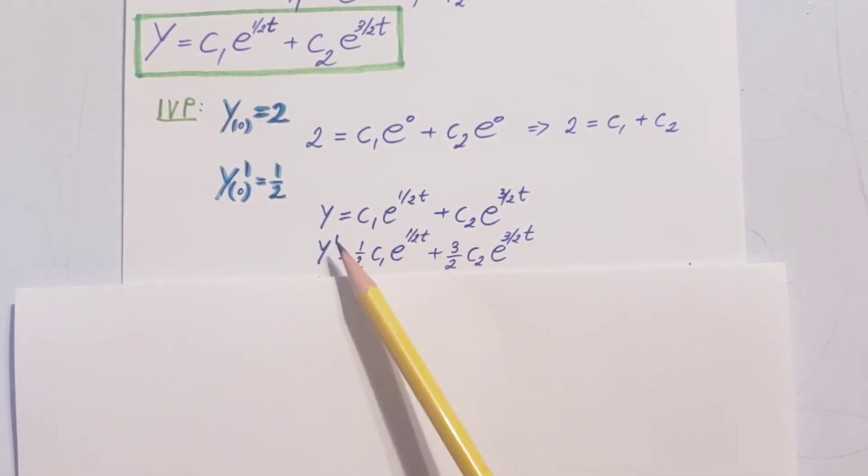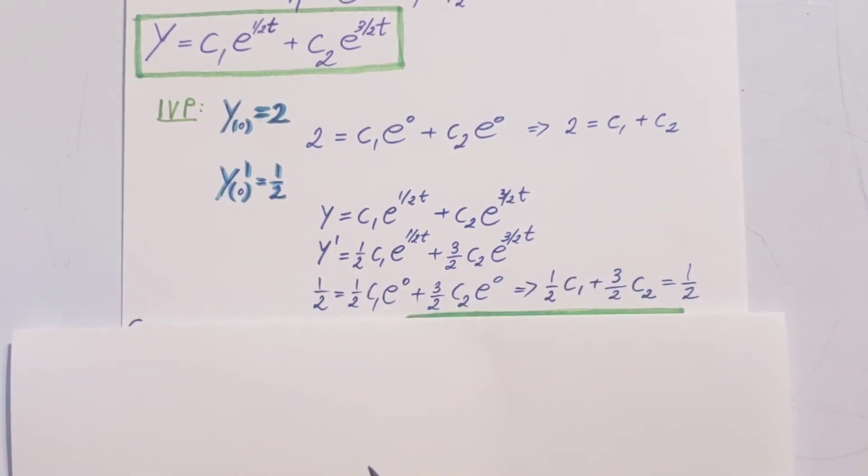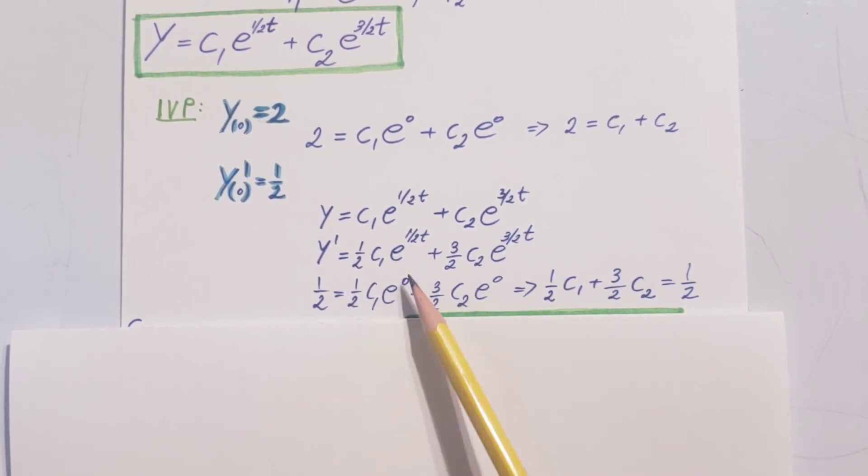Now, we can finally use this one and plug in. So y prime is 1/2 equal to everything you see here, except instead of the t's, we're going to plug in a 0. As you can see, again, the e's will become 1. And this is the equation that we are left with: 1/2 c1 plus 3/2 c2 equals 1/2.